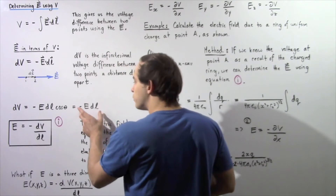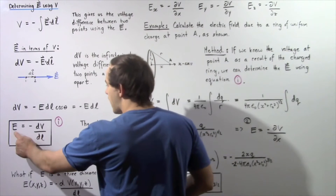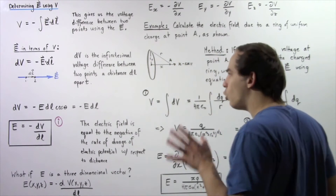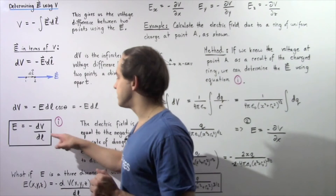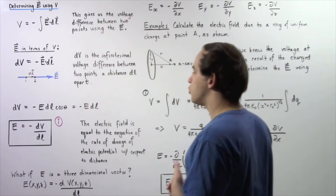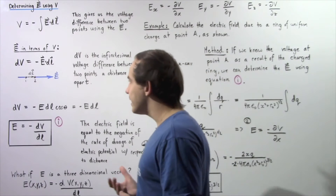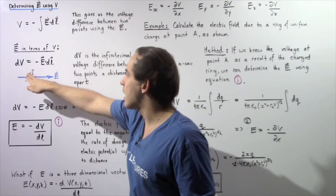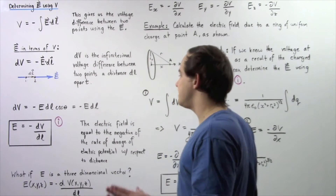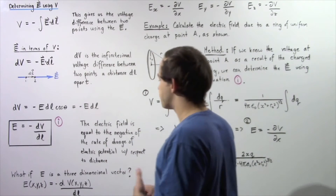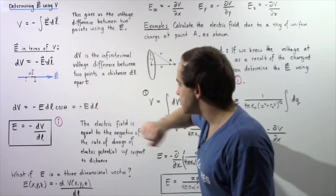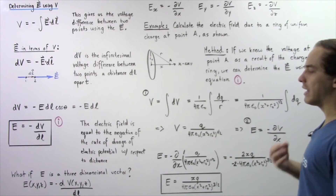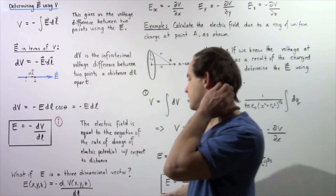Now we can take this equation, rearrange it, and solve for the electric field. We find that the electric field is equal to the negative of the derivative of the voltage with respect to our distance l. Let's call this Equation I. Notice Equation I applies only when our electric field points in the same direction as our dl — in other words, when the angle between these two vectors is assumed to be zero. So the electric field equals the negative rate of change of the electric potential with respect to distance.